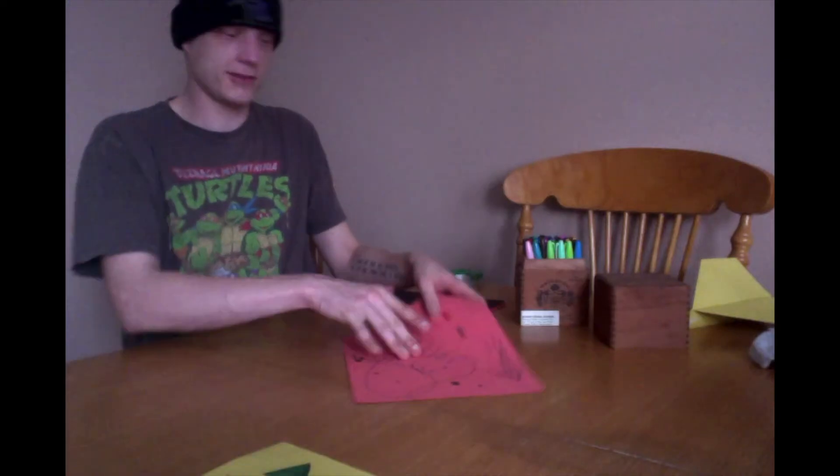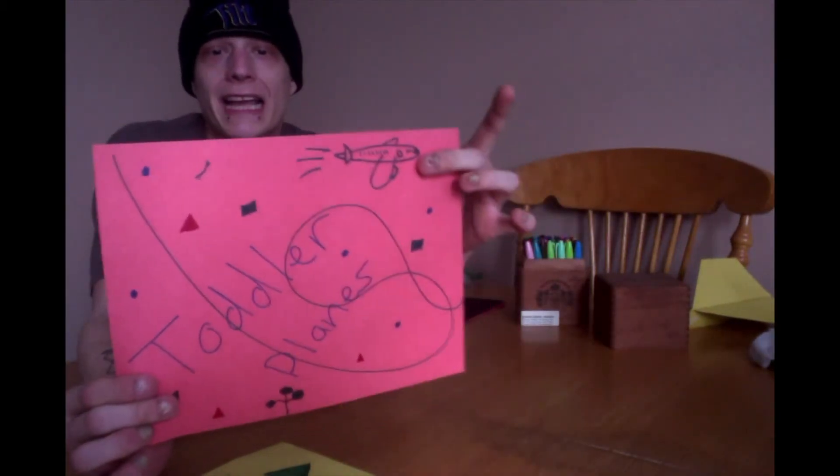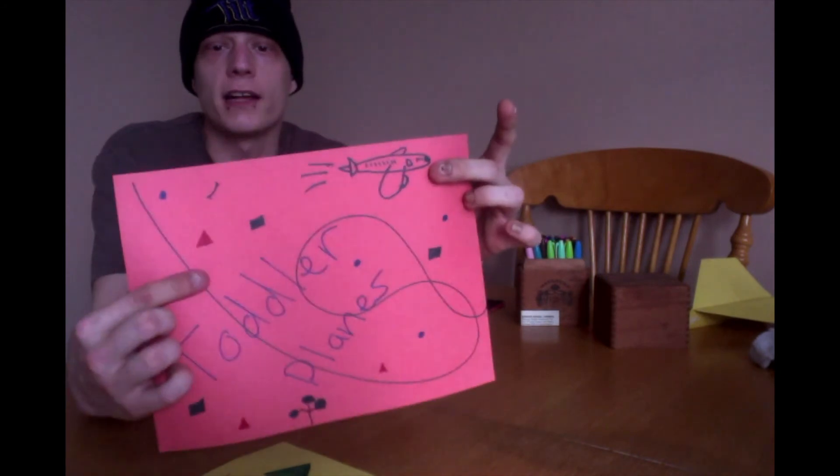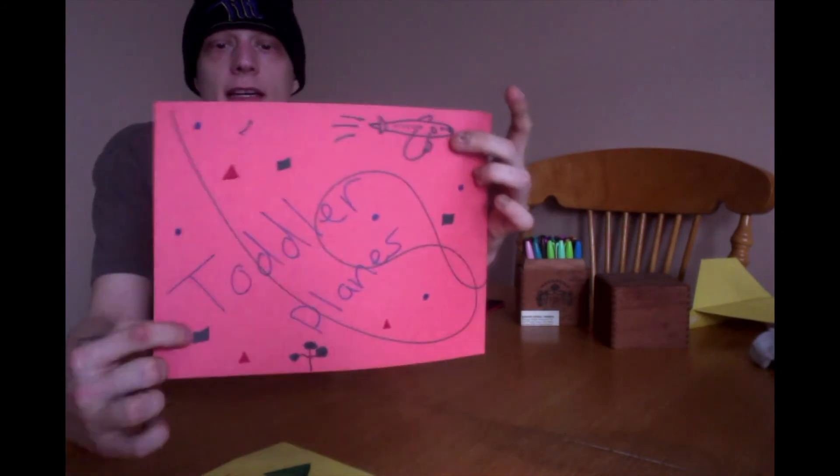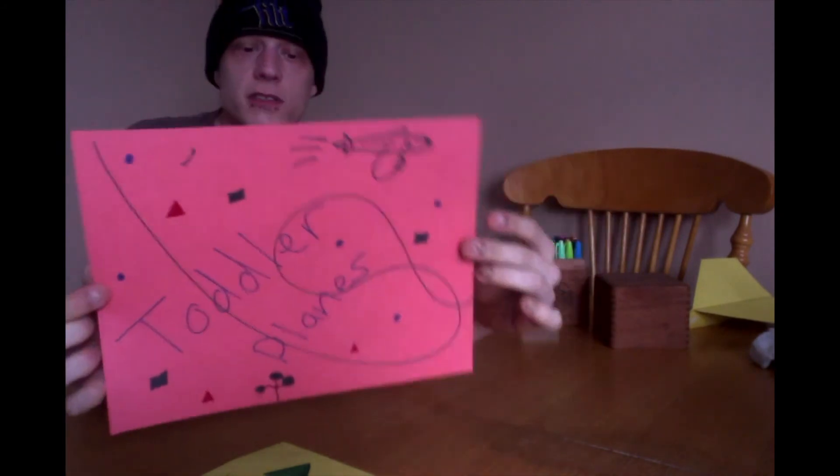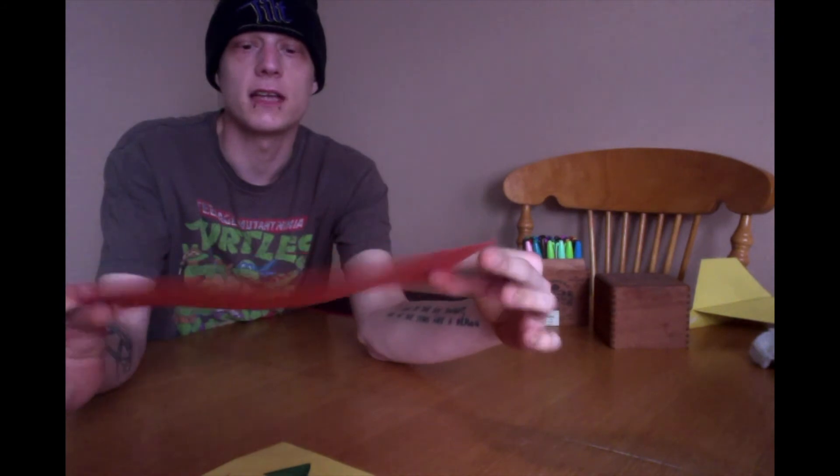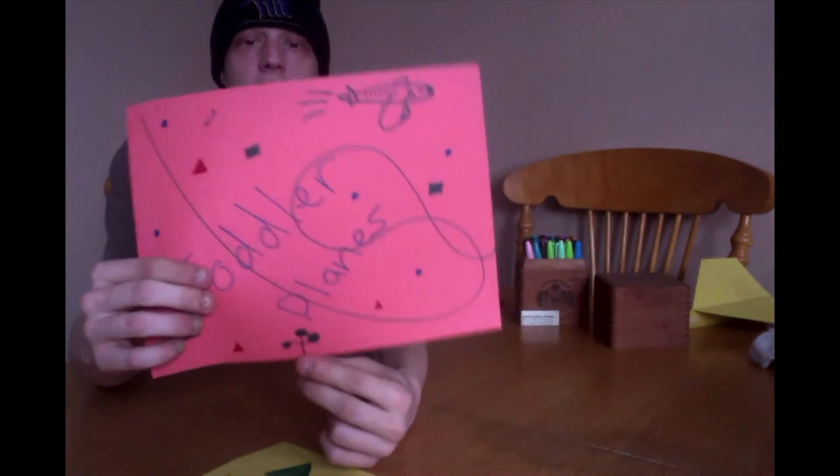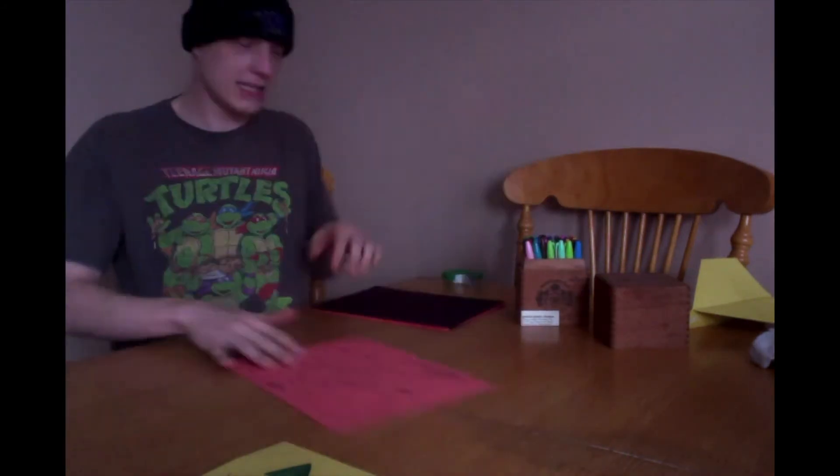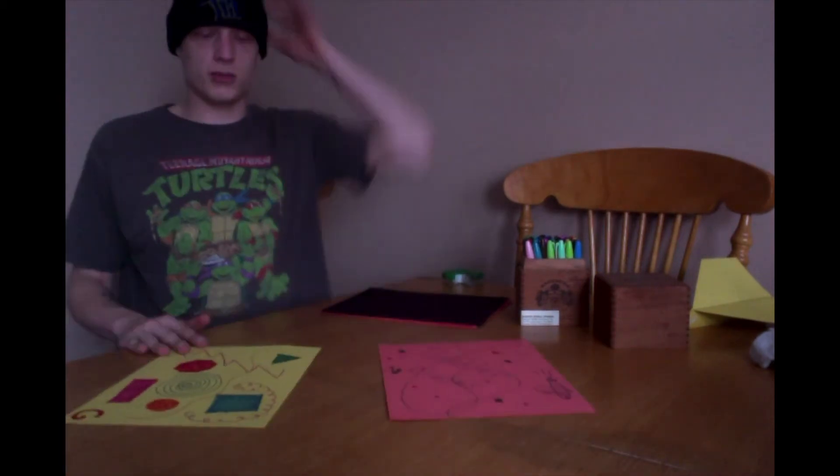And then I also made this one. See, we got a plane. We got little red triangles, little green squares, little blue circles. What else is on here? I got a little tree. So we're going to take these and we're going to fold them into planes. And I'm going to show you how.